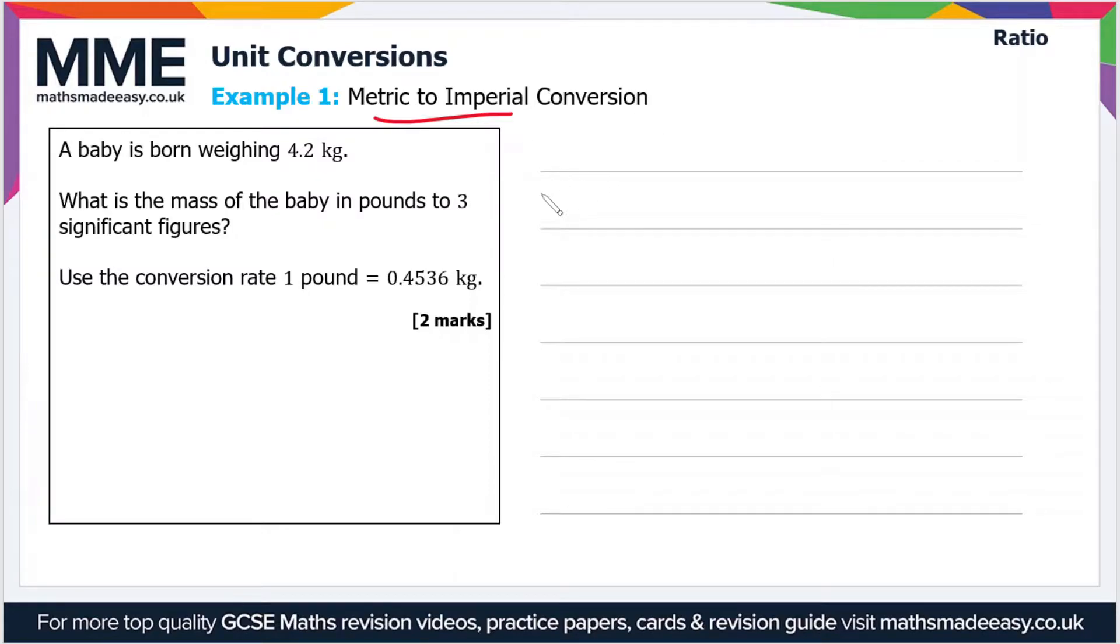So if we've got 4.2 kilograms and the conversion rate is 0.4536 kilograms per pound, then we divide by this conversion rate. Divide by 0.4536 and that will give us the answer in pounds.